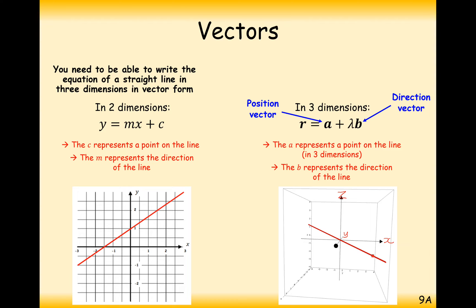The equation of a line in three dimensions consists of a — your starting position — and b, your direction vector, the rate at which you change your coordinates as lambda changes.